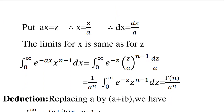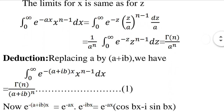This integral equals gamma n by a raised to n. For the next deduction, we replace a with a plus ib. We then have: integral from 0 to infinity of e raised to minus of a plus ib into x times x raised to n minus 1 dx equals gamma n by a plus ib the whole raised to n. This is equation 1.